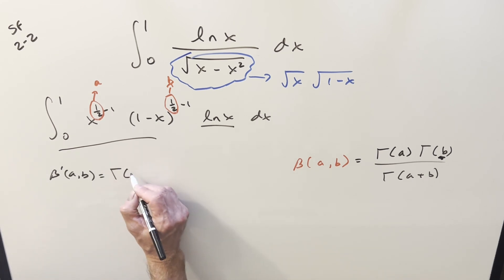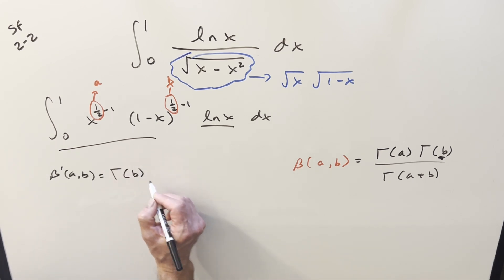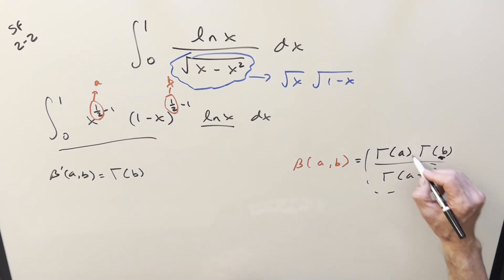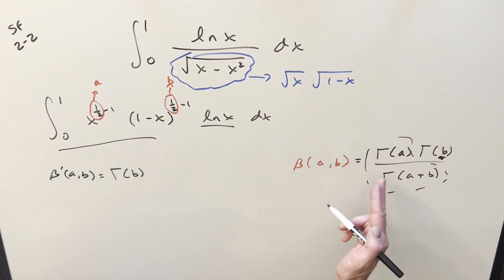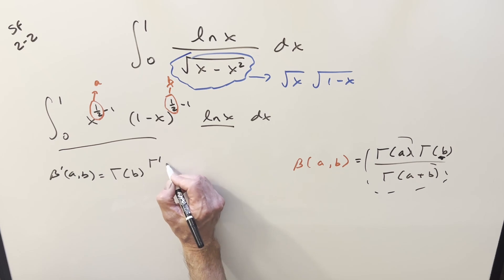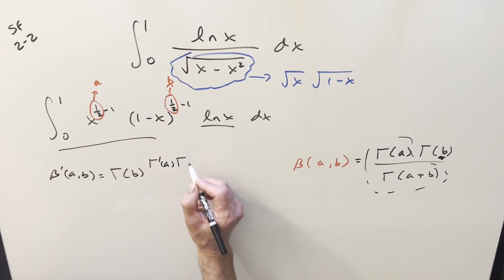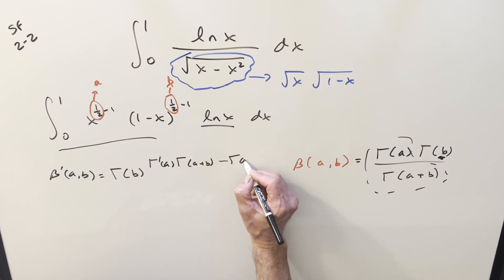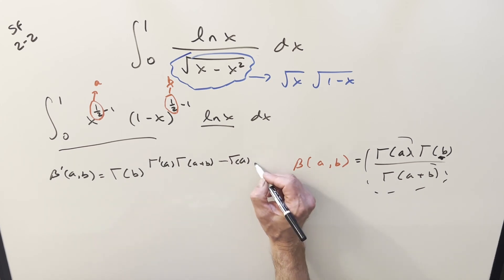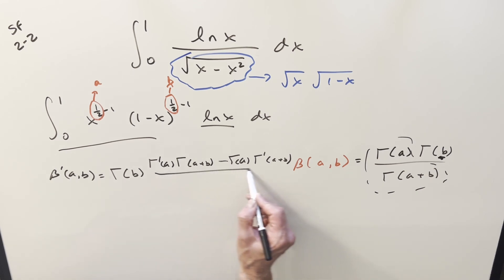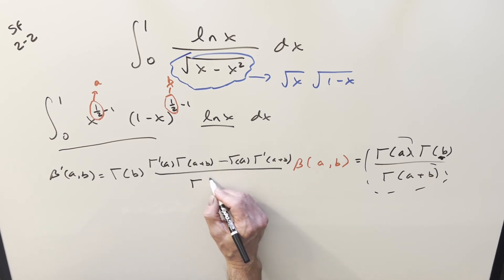I'll take gamma of b out front as a constant, and then with what's left, we just have the quotient rule. The derivative of the first part is the derivative of gamma of a brought along with gamma of a plus b, minus gamma of a times the derivative of gamma of a plus b, all over the denominator squared.